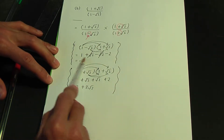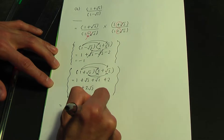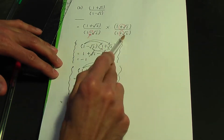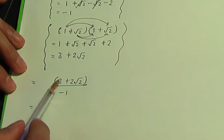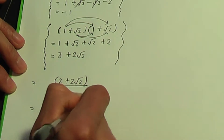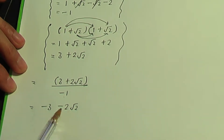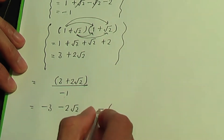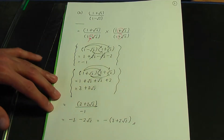So for the top two brackets, when multiplied, we have three plus two root two. For the bottom pair of brackets, the answer is minus one. You can write this in two ways: divide each top term by minus one to give minus three minus two root two, or factorise by minus one giving a minus into three plus two root two. That's the solution to part B.